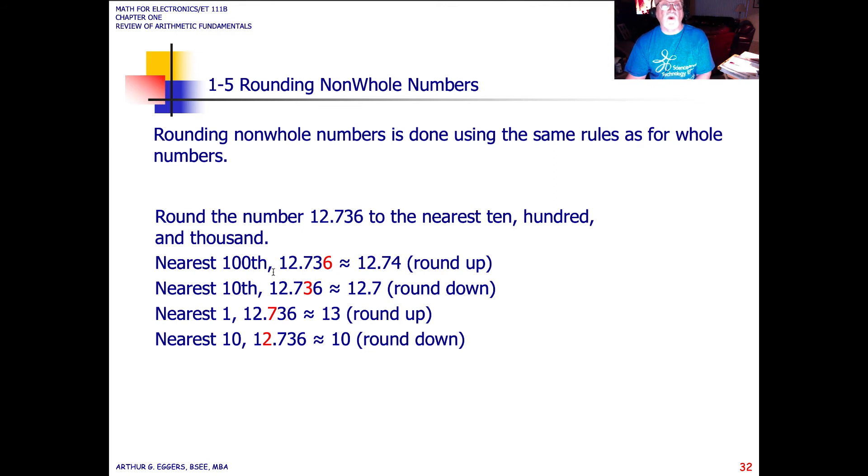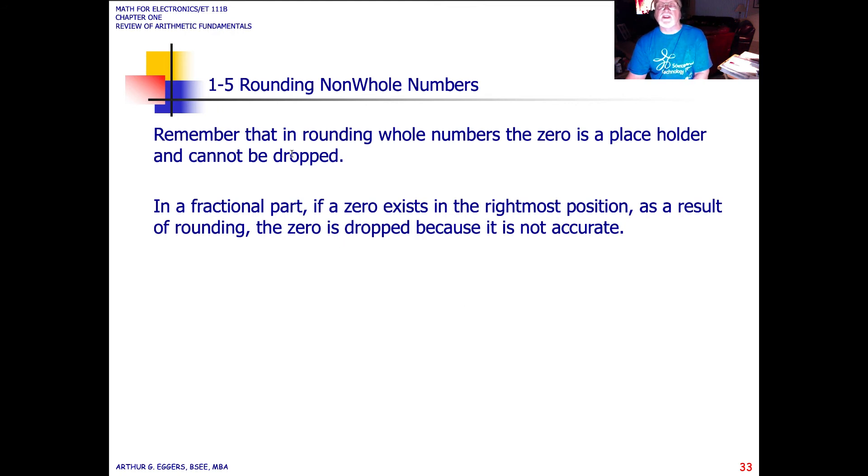An example here, to the nearest one-hundredth, this becomes twelve-seventy-four to the nearest one-hundredth. To the nearest tenth, three is next to the tenth, so that becomes a round down. To the nearest one, seven is next to the one, so we round up to the next value. And the same thing with the tenths digit. In rounding whole numbers, remember that in rounding whole numbers, the zero is a placeholder, but it cannot be dropped. If a zero exists in the rightmost position, as a result of rounding, the zero is dropped, because it's not accurate.